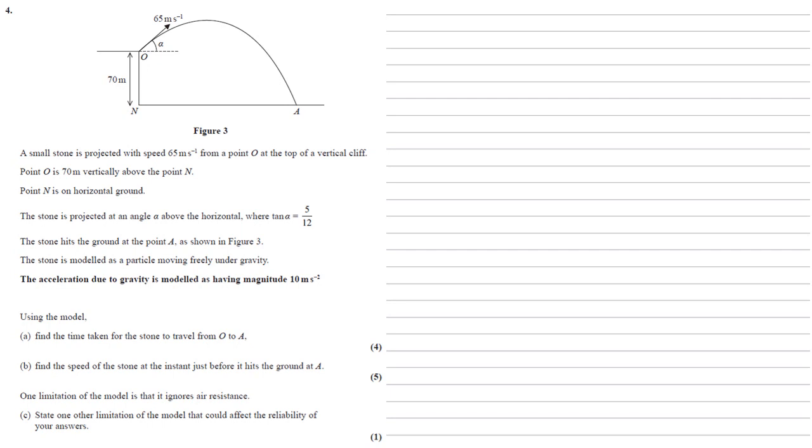The first thing I'm going to do here is we've been given the tan alpha. So let's work out our cos alpha and sine alpha because we're going to need these for the question. So if tan alpha equals 5 twelfths, if we think of this in a right angle triangle,